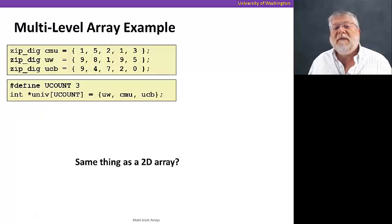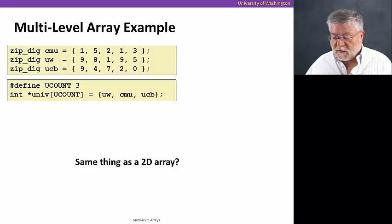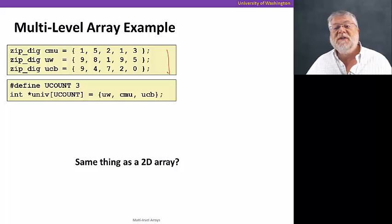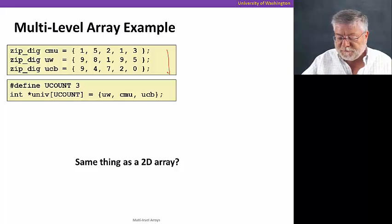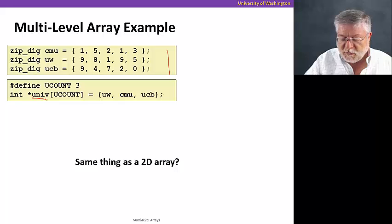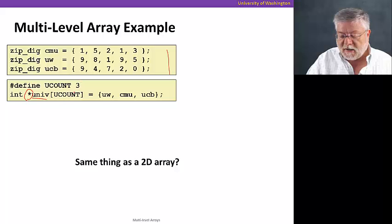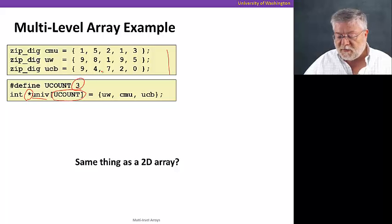Let's take a look at a multi-level array. Here, I'm showing three one-dimensional arrays that we've declared, our zip-digit arrays, one for each zip code of five digits each. One-dimensional arrays. We're now going to declare a multi-level array, called univ, that is actually an array of pointers to integers. You notice the star there in front of it. And it's going to have this number of elements, in this case set to three,